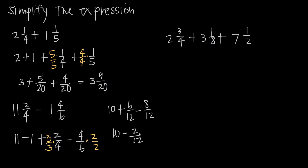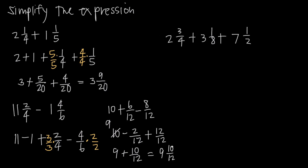I can't end up with subtraction as my final step, so I need to borrow 1 from my whole number. I make the 10 a 9 and add 12/12 back in. So I have 9 plus negative 2/12 plus 12/12. Negative 2 plus 12 is positive 10, giving me 9 and 10/12. I can still reduce — dividing numerator and denominator by 2 — so my final answer is 9 and 5/6.